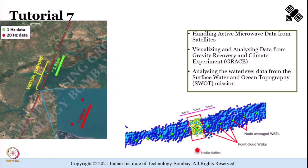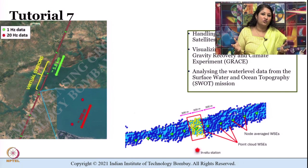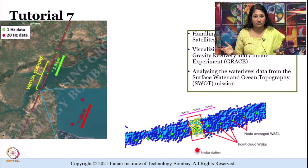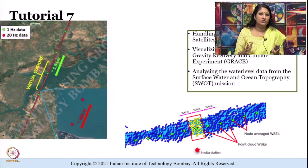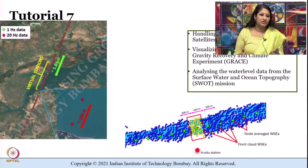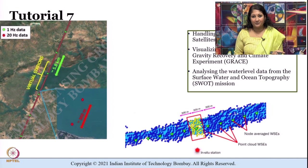The twin satellites of GRACE, launched in 2002, offer detailed measurements of Earth's gravity field changes, enabling investigation of water stored over land, ice, and oceans. We will also learn how microwaves can estimate water surface elevations, and data processing using the Surface Water and Ocean Topography (SWOT) mission — proposed to be launched in 2022 — shall be shown using the CNES large-scale simulator. More details of these shall be shared in Tutorial 7.